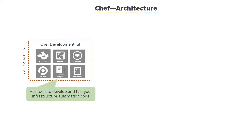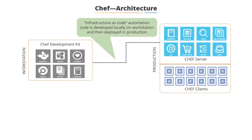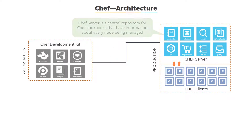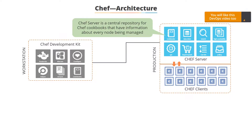The infrastructure as code automation is developed locally on a workstation and then deployed into production once it has been completed, verified, and tested. Your Chef server is a central repository where all your Chef cookbooks reside, and your Chef cookbooks in turn have information about each and every node that is being managed by the Chef server.